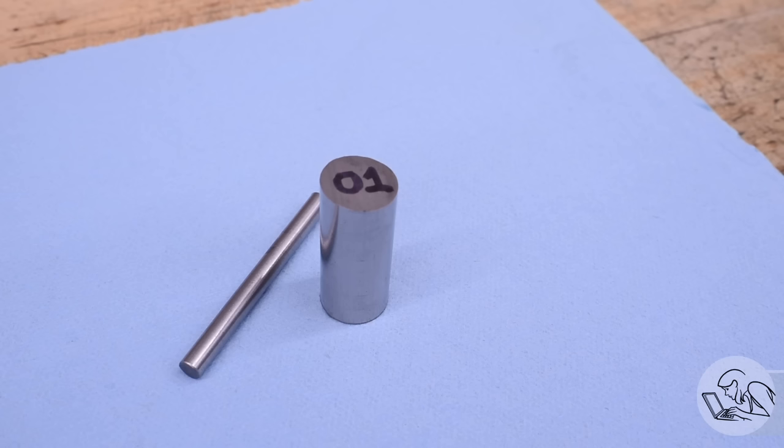Step one in heat treating is to choose your steel. It has to be a heat treatable steel, which means a high carbon steel. Typically this means tool steels, although there's some other steels like 4140 that can be heat treated.